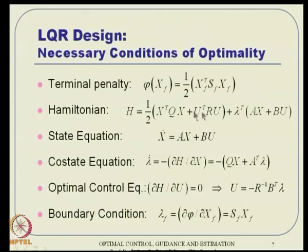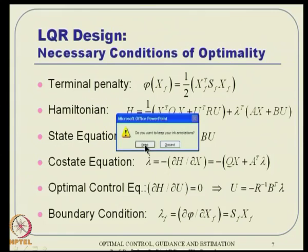Once you know the Hamiltonian and phi, the necessary conditions are all there. The state equation is X_dot = AX + BU. The costate equation is lambda_dot = −(QX + A^T lambda). The optimal control equation is del H / del U = 0, giving U = −R^{-1} B^T lambda. The small versus capital letter distinction is important here — we are dealing with vector variables throughout.